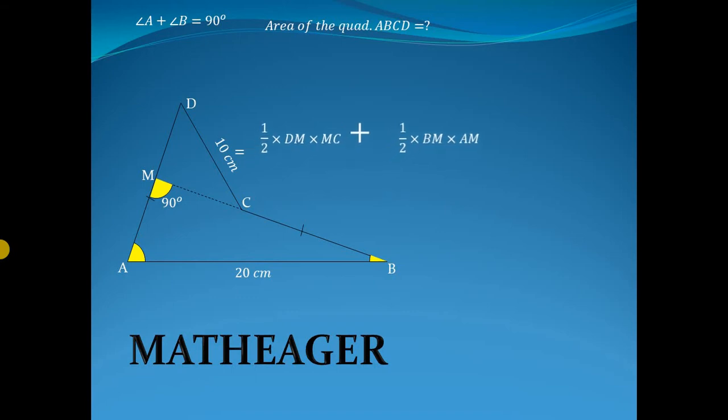Now suppose the magnitude of BC is r, then AD will also be r because these two sides are equal by the given question.